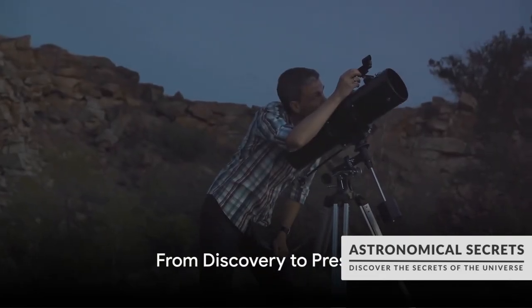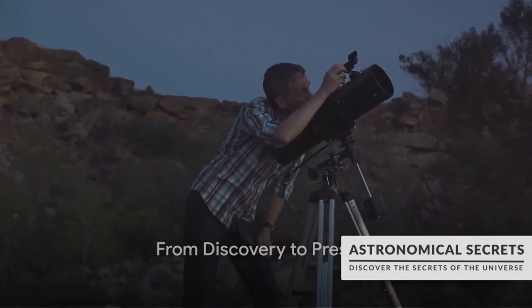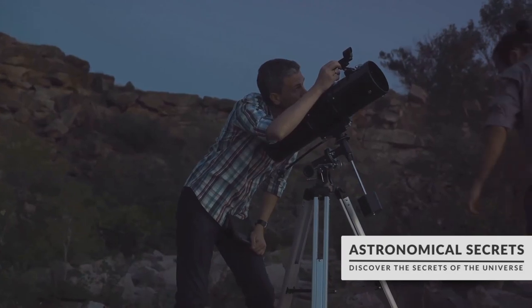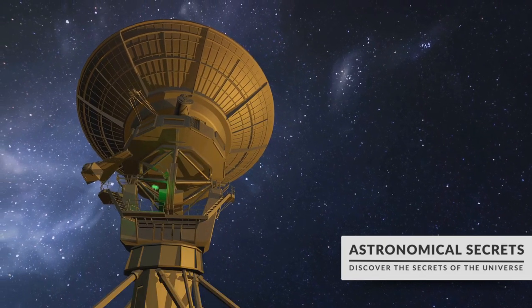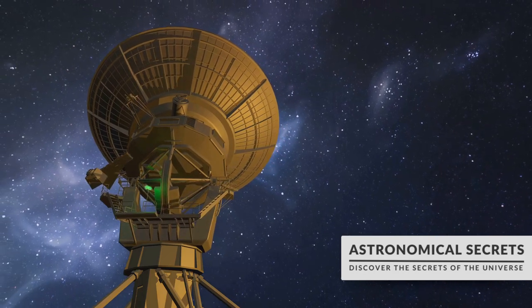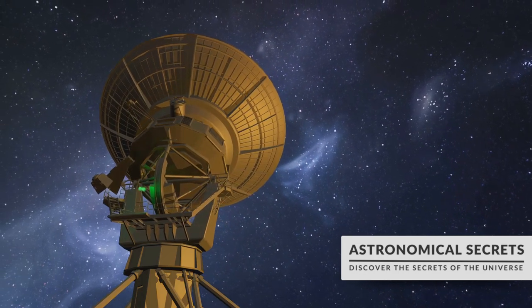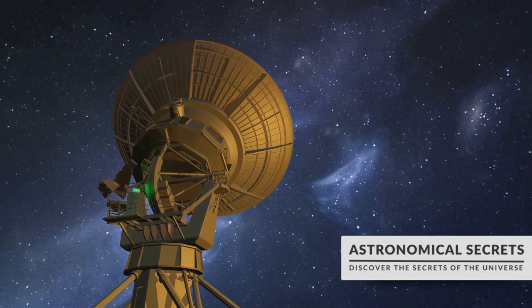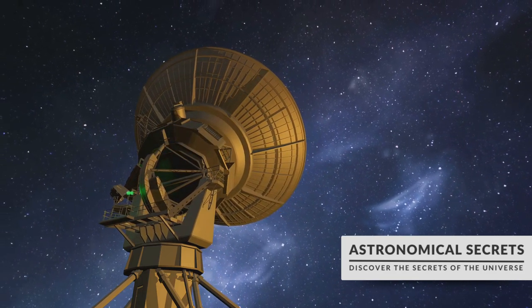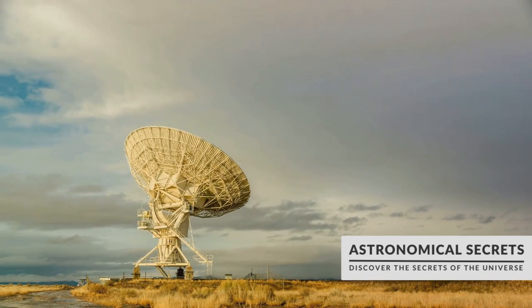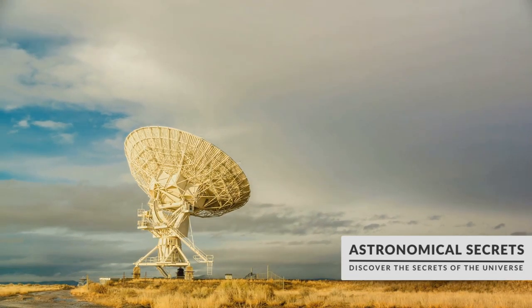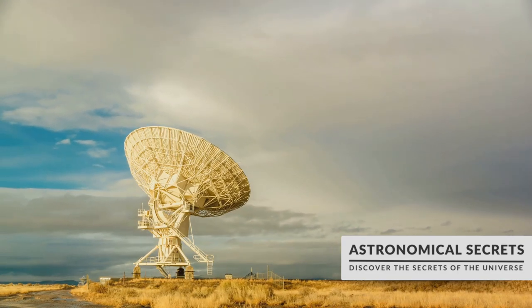The year was 1967 when Jocelyn Bell Burnell discovered the first pulsar, opening a new chapter in our understanding of the cosmos. In the heart of Cambridge University, Jocelyn Bell Burnell and her supervisor Anthony Hewish were working on a new type of telescope designed to monitor quasars. During their observations, they stumbled upon an anomaly, a regular signal, a series of pulses, each lasting for about one and a third seconds.